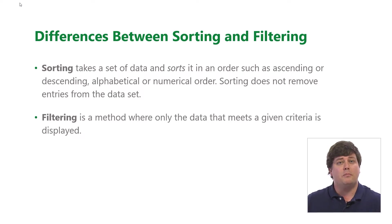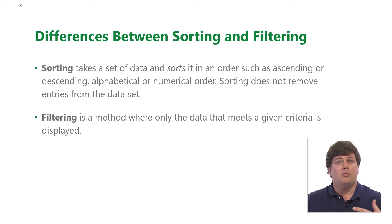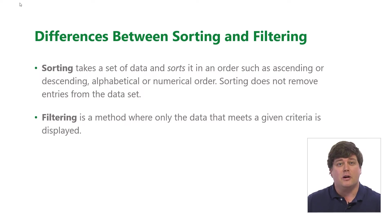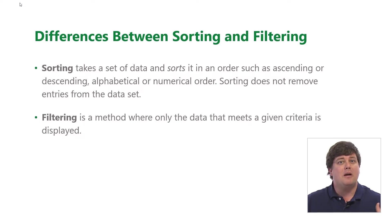In order to sort by a column, you have to have that data. You can't sort by projects that were the most fun to work on unless you have a column with a metric for that. So usually we sort by number items, by size, alphabetically by name, by location, something to that extent.